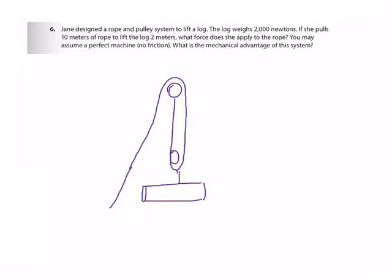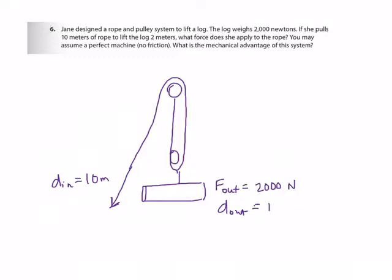Number six: Jane designed a rope and pulley system to lift a log. The log weighs 2,000 newtons — that's my output force, what the machine must lift. If she pulls 10 meters of rope (input distance = 10 m) to lift the log 2 meters (output distance = 2 m), what force does she apply to the rope? We're told to assume a perfect machine with no friction, so input work equals output work.